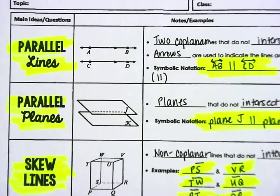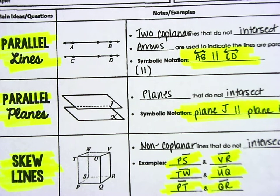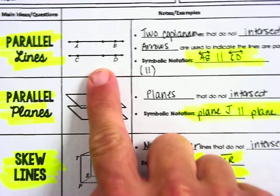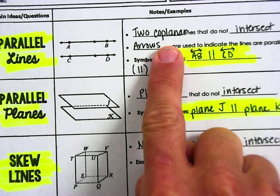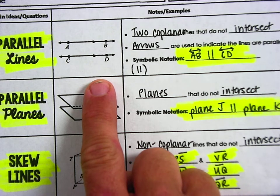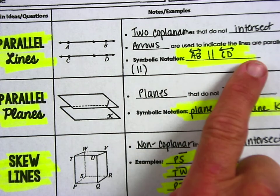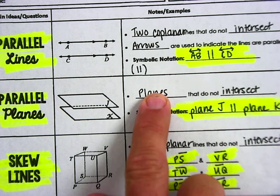Parallel lines. You've seen it, you've done it, you've heard it. I just want to make sure you're going to get the notation right. So parallel lines are two lines in the same plane that don't intersect. Coplanar means they're in the same plane. In other words, they're drawn on the same sheet of paper. They do not intersect. Arrows are used to indicate the lines are parallel.